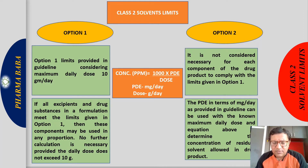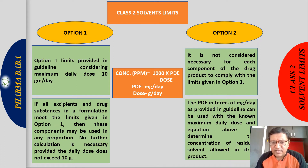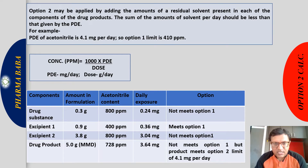However, it is not always possible for every excipient or drug substance to comply with the Option 1 limit. In that case, we can apply Option 2, where we consider the exact maximum daily dose. Option 2 may be applied by adding the amount of residual solvent present in each component of the drug product; the sum of amounts of solvents per day should be less than the value given by the PDE.